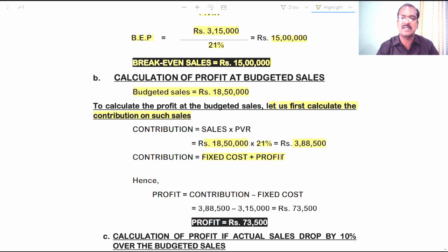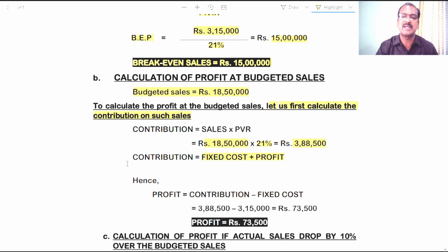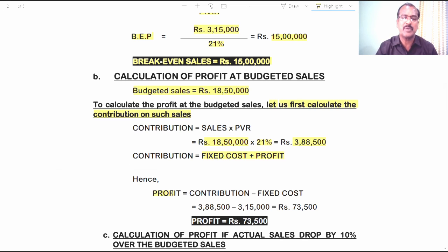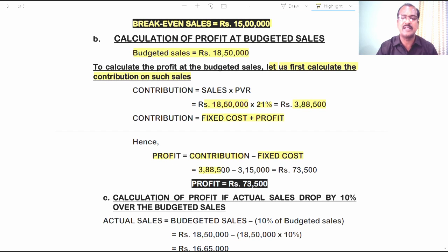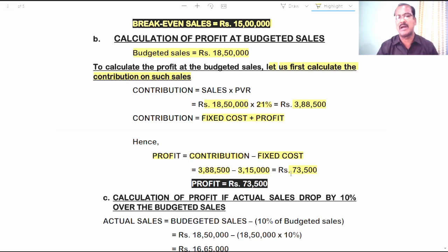Contribution includes fixed cost and profit. Rearranging the formula: profit is equal to contribution minus fixed cost. So, 3,88,500 minus fixed cost 3,15,000 gives a balance of 73,500 as profit. At the budgeted sales of 18,50,000 rupees, this business could earn a profit of 73,500 rupees.